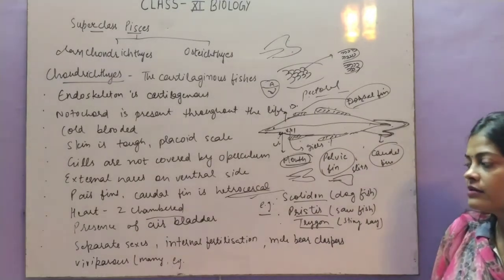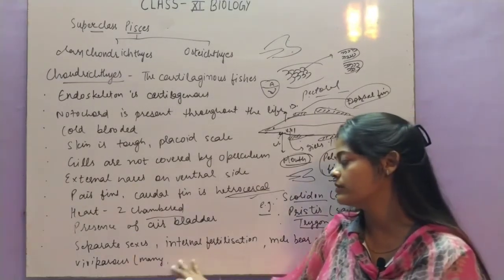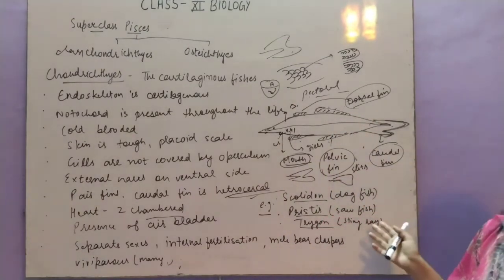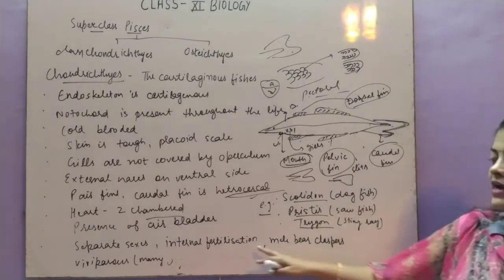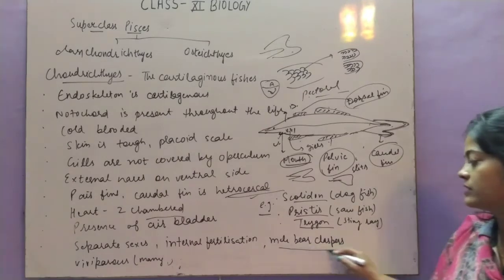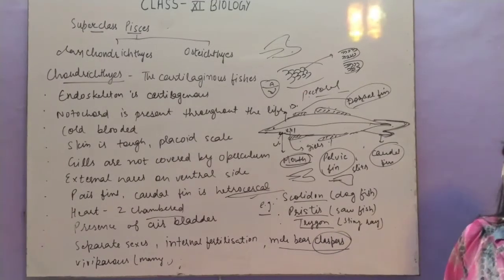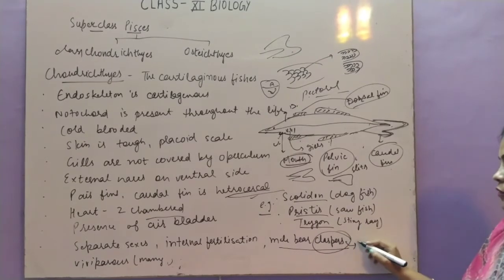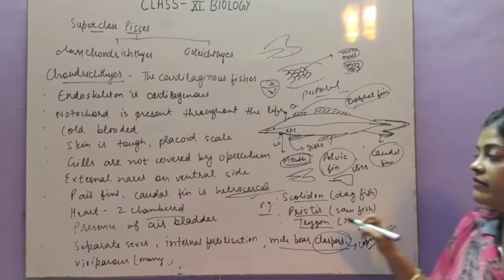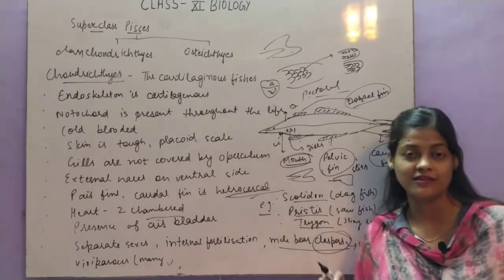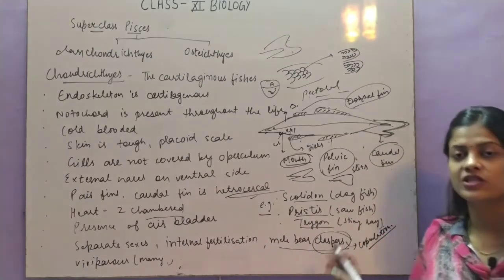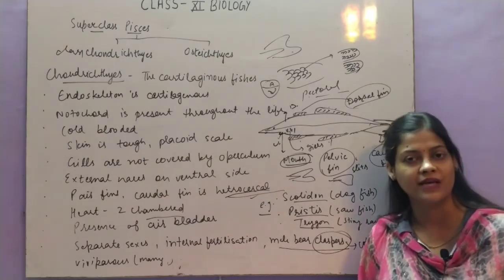Sexes are separate — male and female can be easily differentiated, so they are unisexual. They show internal fertilization. The males have claspers, which are structures that help in copulation. Although most aquatic organisms show external fertilization, Chondrichthyes show internal fertilization because of the copulatory organs — the claspers — present in the male fishes.